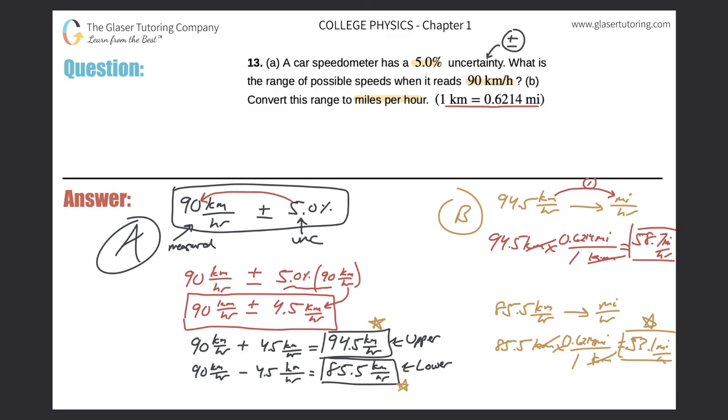Okay, so we have our upper limit of 58.7 miles per hour, and we have the lower limit of 53.1 miles per hour. And that would be the range.